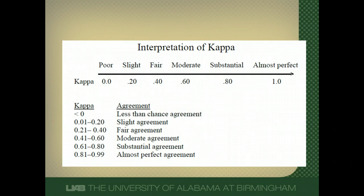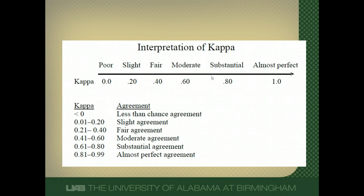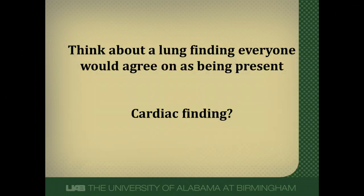This table gives you a sense of how to interpret kappas. I'd like my kappas to be 1 — perfect agreement never due to chance. I use a cutoff of around 0.8 as being important agreement. Less than that, I'm worried about too much guesswork and chance. Think about a lung finding that you believe multiple students or faculty would all agree is present or absent. Also think about a cardiac finding — surely there's something we're all very good at detecting and agreeing on.